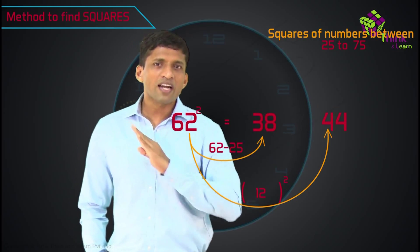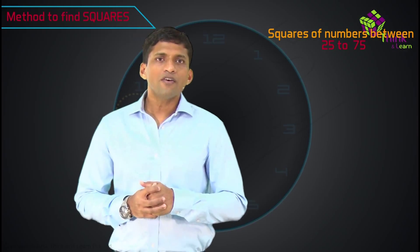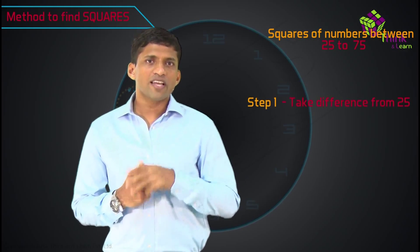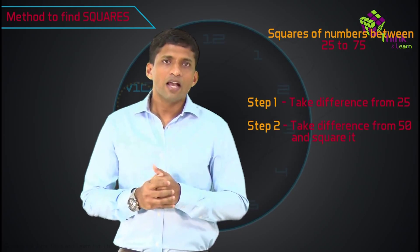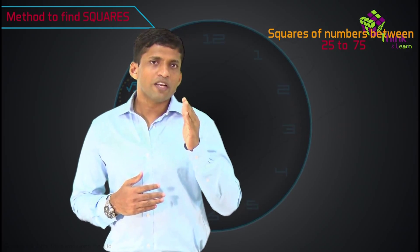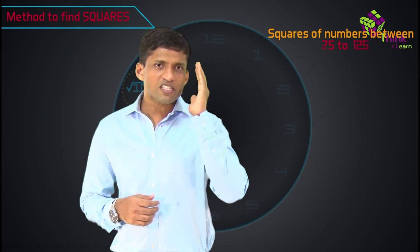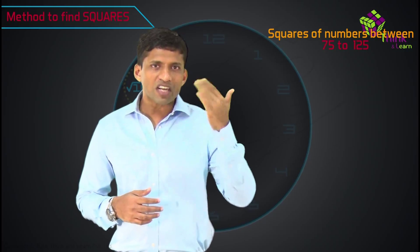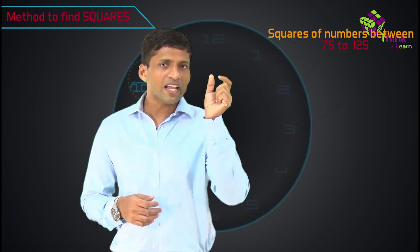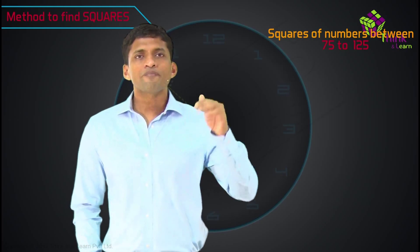This method is actually based on multiples of 25. We are taking the difference from multiples of 25. First step is taking the difference from 25. Second step is taking the difference from 50 and squaring that. The previous method works between 25 and 75. Now, to extend this to a similar method between 75 and 125, it is even faster, because we can take 100 here.